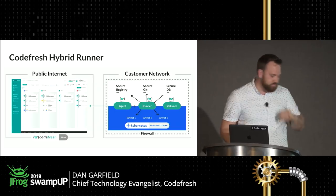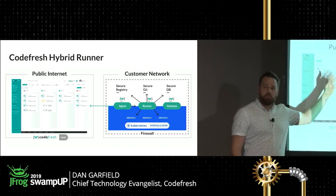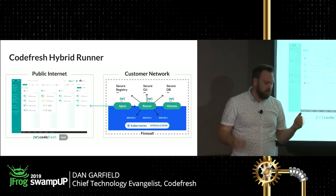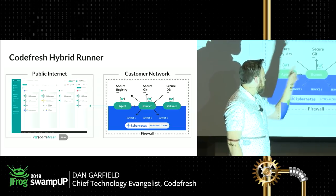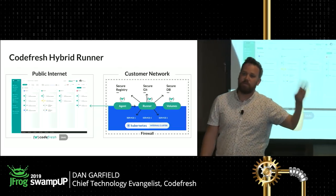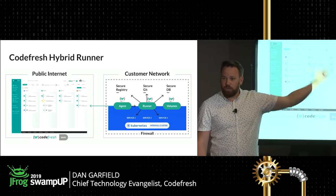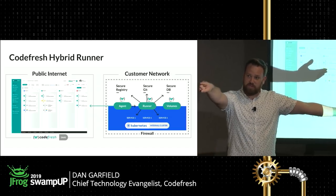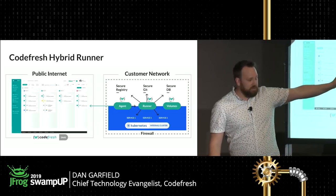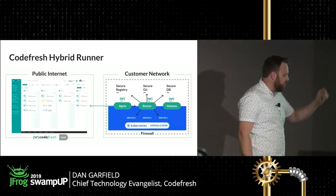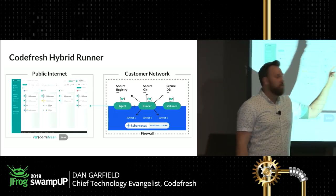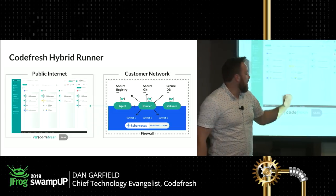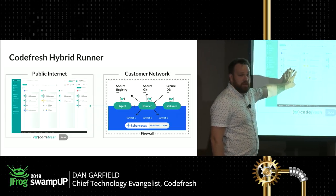How does the runner work? Basically, you have an instance of Codefresh running — most of the time this is the public SaaS at codefresh.io, providing all the services. Then you have the Codefresh runner behind a firewall. This could be on a boat, in a virtual private cloud, on a smartwatch, wherever. The way it works is: rather than pushing to it, the Codefresh runner checks in periodically and looks for jobs — it says, "Do you have anything I need to deploy?" It doesn't have to be the SaaS; it could be a Codefresh on-prem installation.